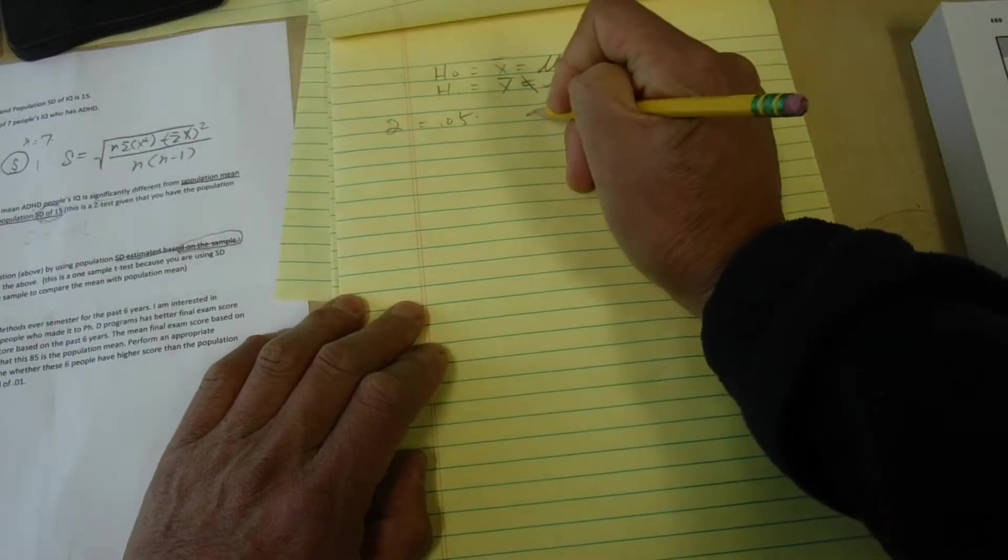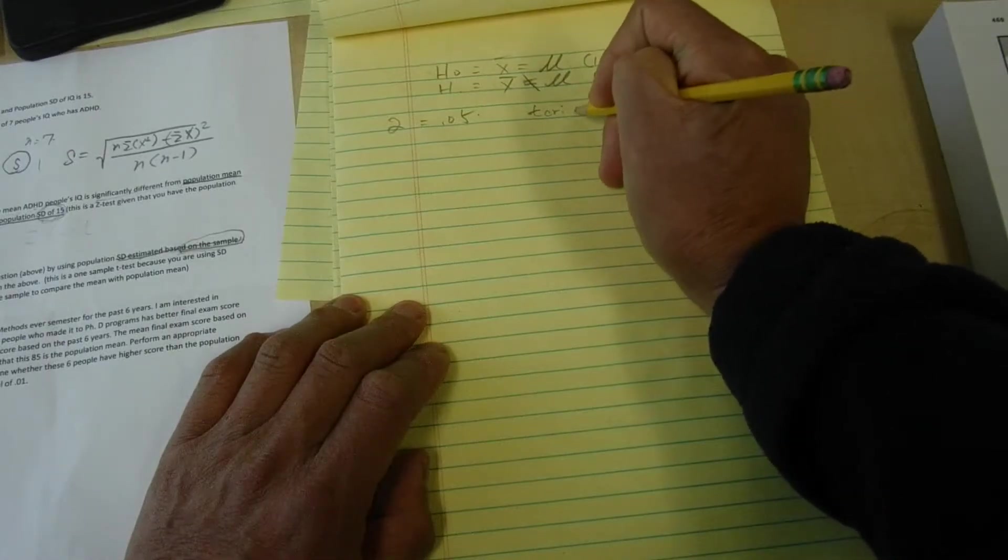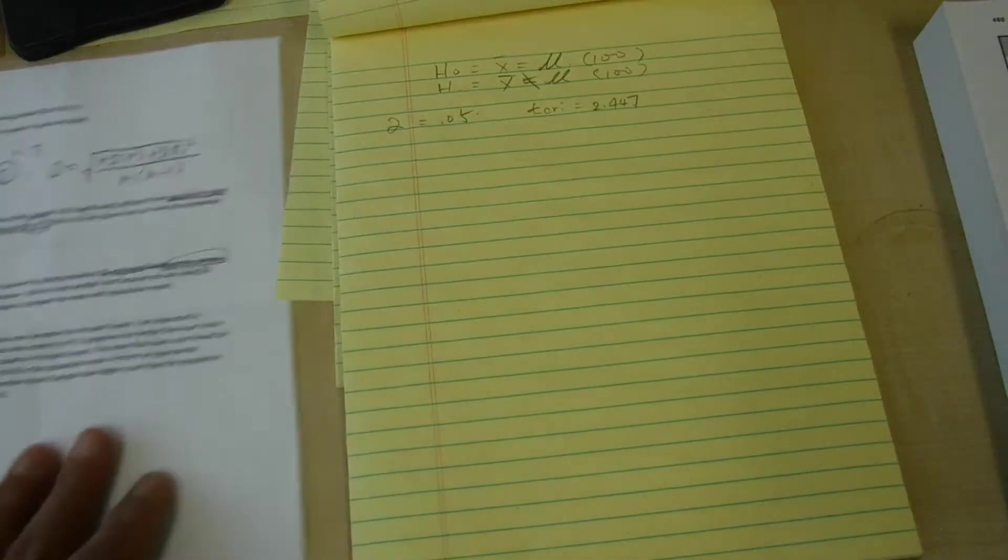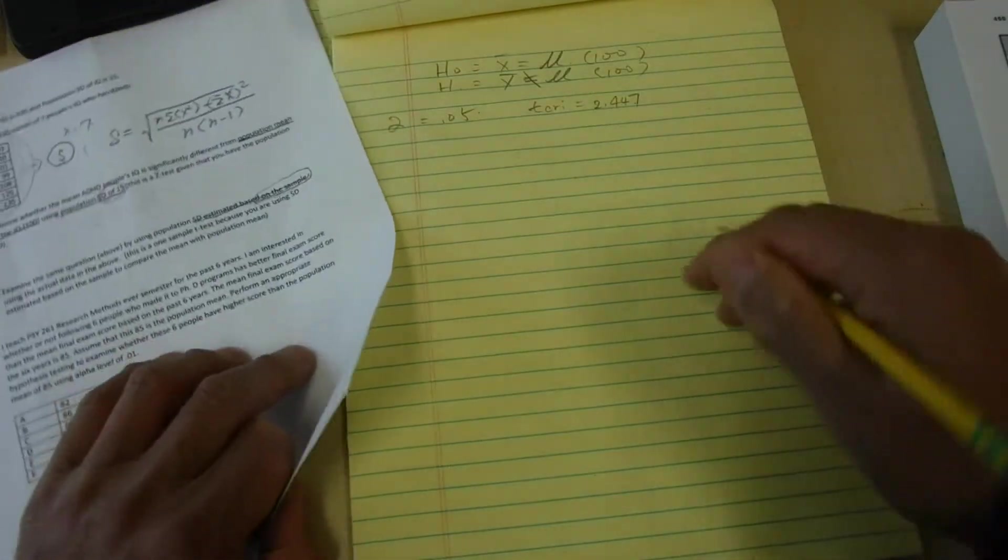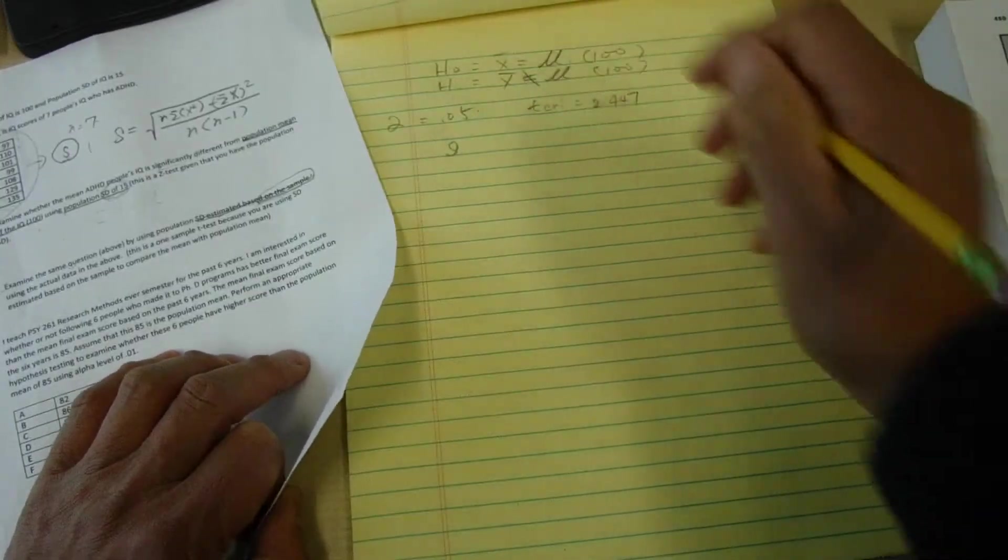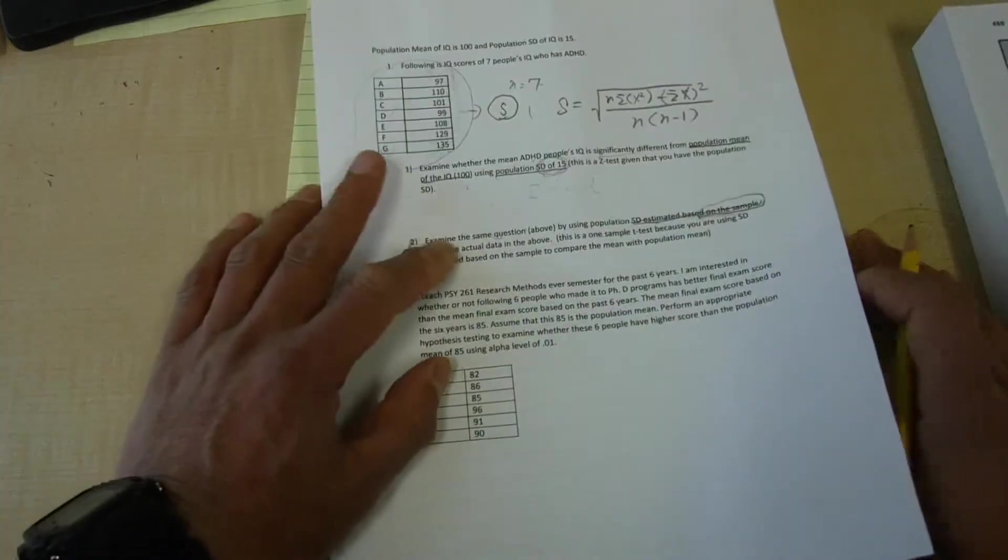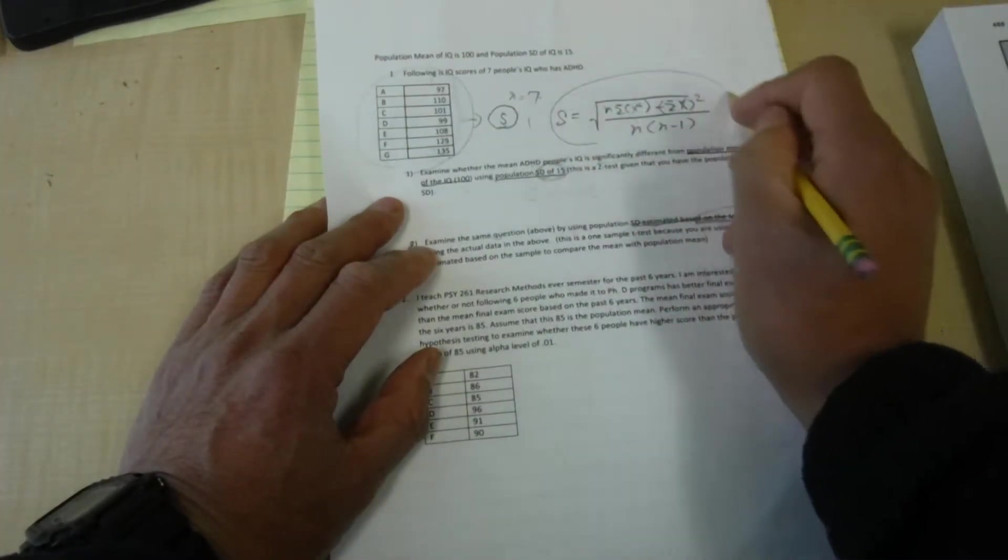Then what do you need to do? So you have to compute standard deviation of the population estimated of the sample. So this can be given by this equation that you've been using.